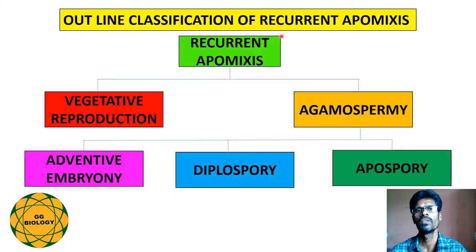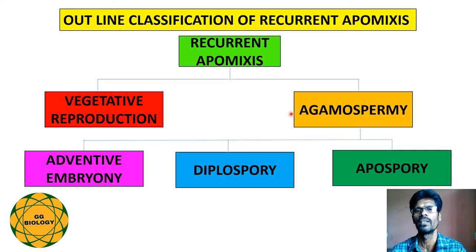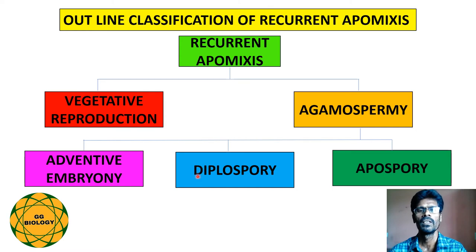The outline classification of recurrent apomyxis is as follows: recurrent apomyxis can be broadly divided into two types — vegetative reproduction and agamospermy. Agamospermy can further be divided into three types: adventive embryony, diplospory, and apospory.